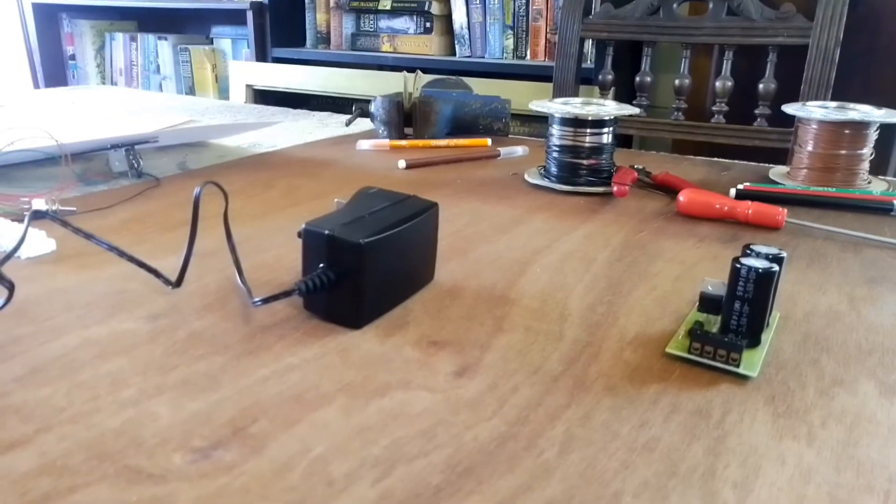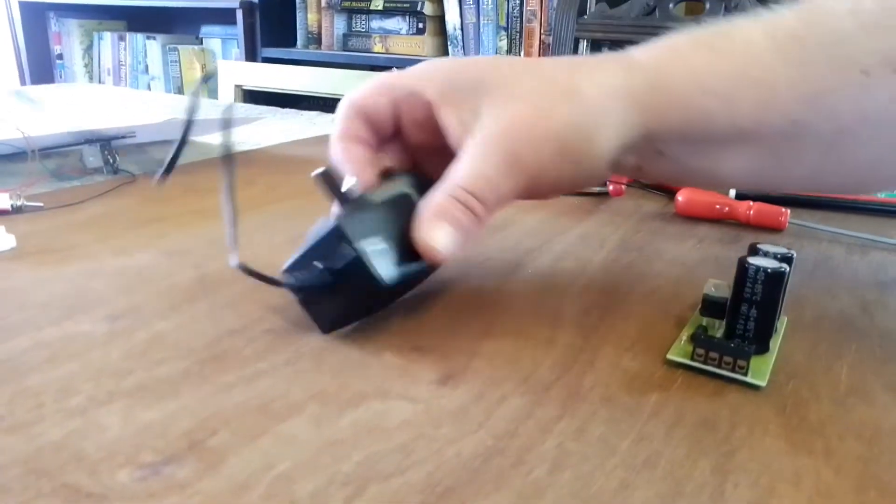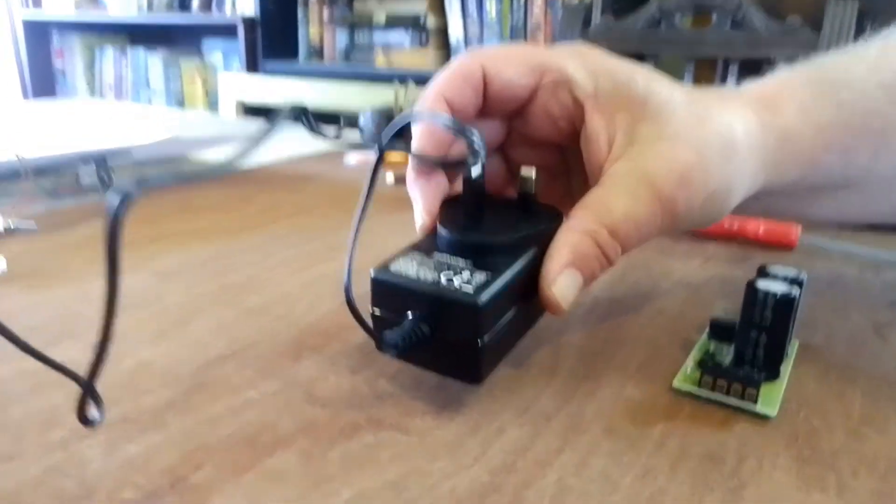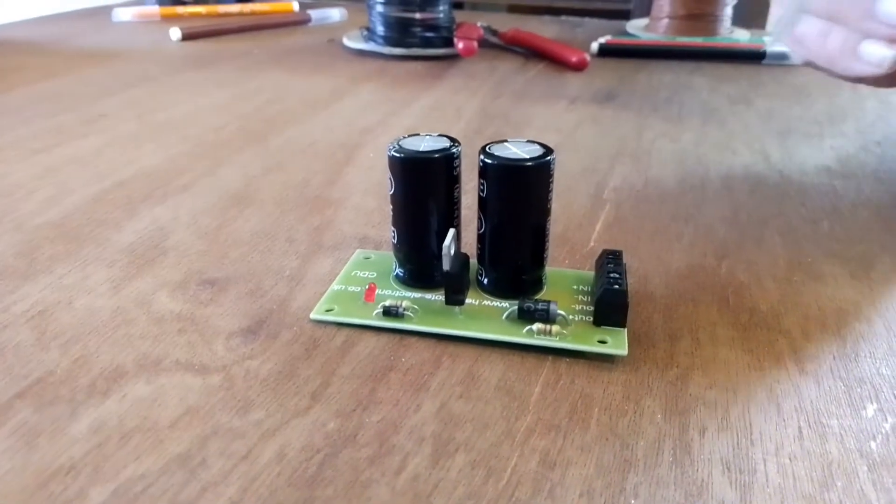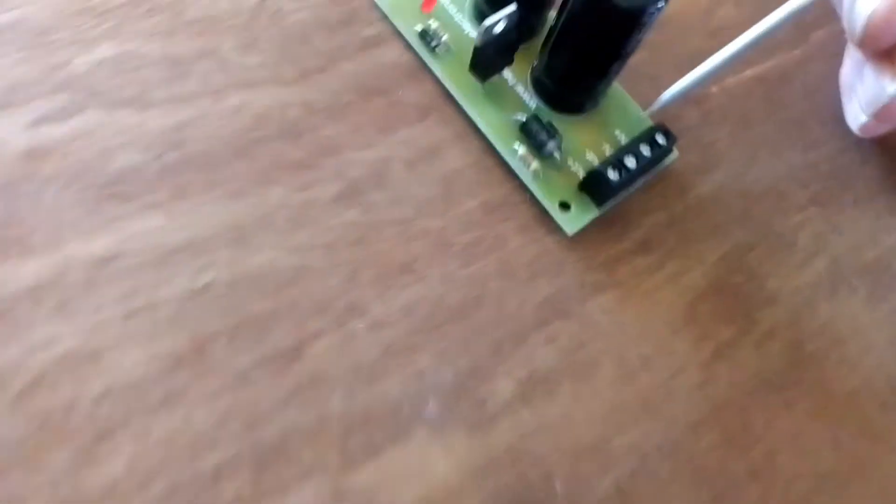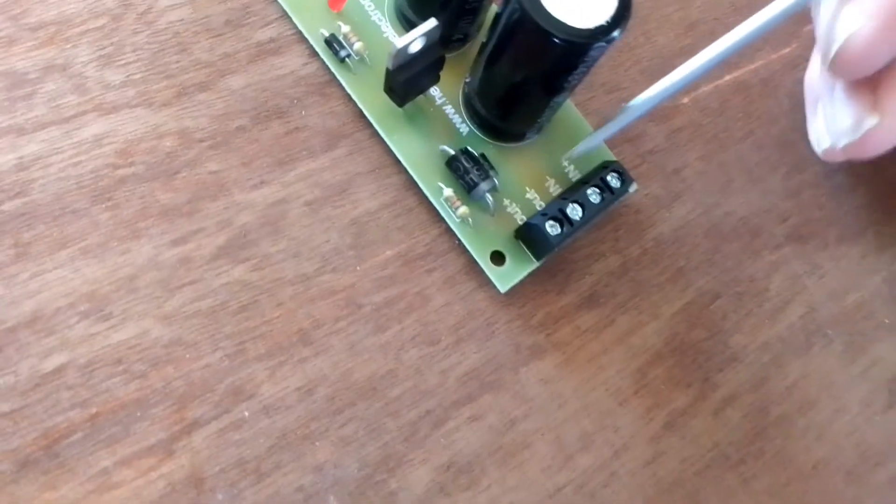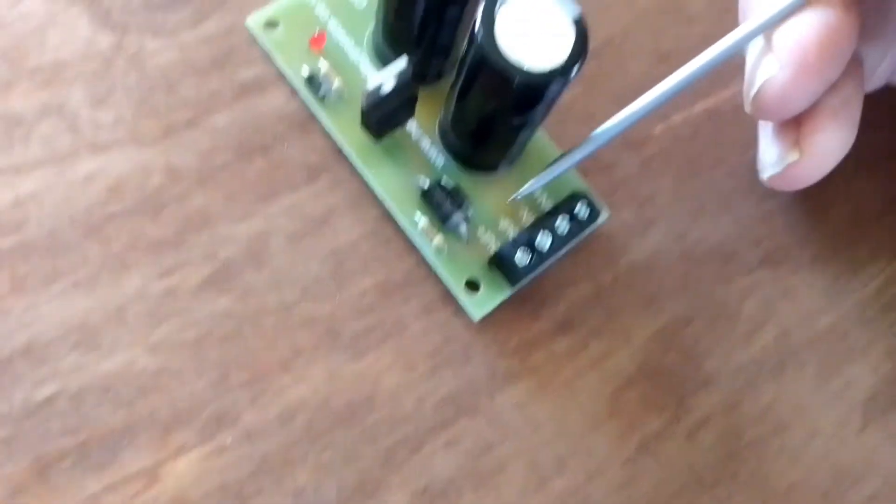Just to show how to connect up the CDU, here's the 24 volt one amp power supply we're going to use to power it. I'll connect this up first and then show you what happens. There are four terminals on the CDU: two were labelled in plus, in minus; two were labelled out plus, out minus.